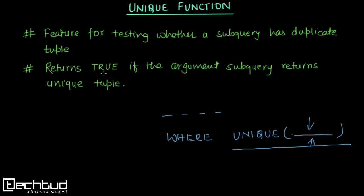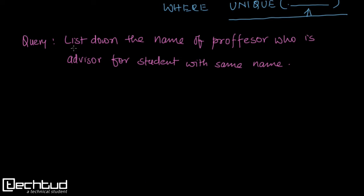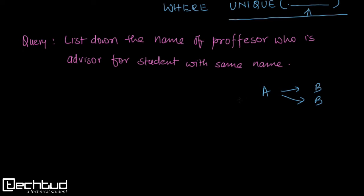So let's see an example. The query is: list down the name of professors who are advisors for students with the same name. What I mean is we need to list down the name of a professor for whom there are two students with the same name — for example, professor A is a guide for two students both named B. In that case we have to list down the name of that professor.